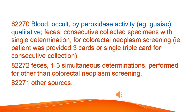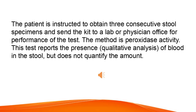Blood Occult by Peroxidase Activity, e.g., guaiac — qualitative, feces. Consecutive collected specimens with single determination for colorectal neoplasm screening (patient provided three cards or single triple card). Feces, 1–3 simultaneous determinations performed for other than colorectal neoplasm screening. The patient obtains three consecutive stool specimens; method is peroxidase activity. This test reports the presence (qualitative analysis) of blood in the stool but does not quantify the amount.